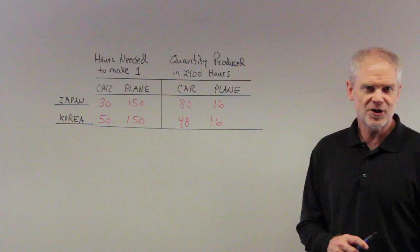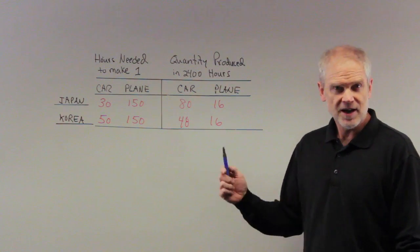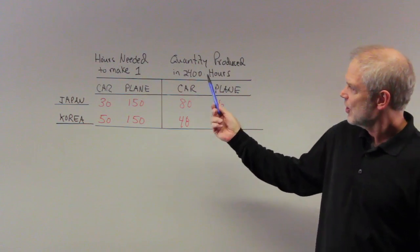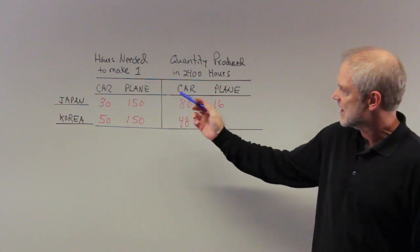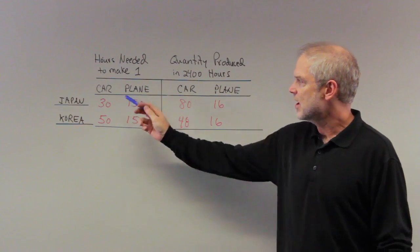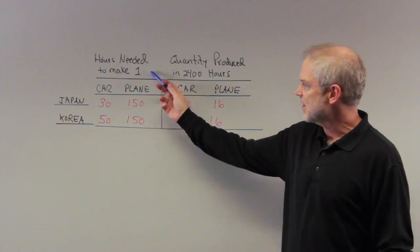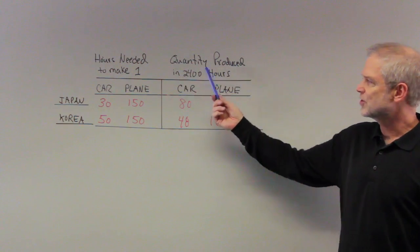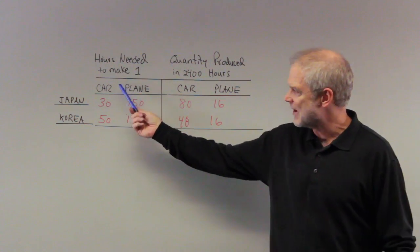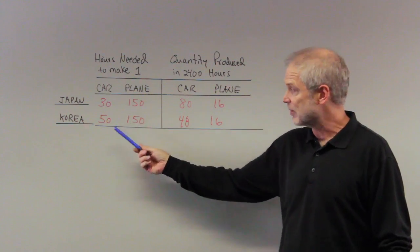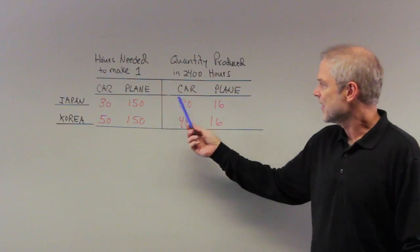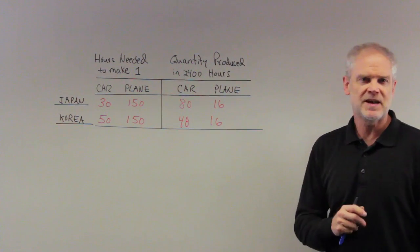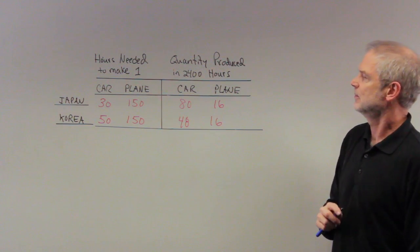So on your handout, the quiz you should have posted, it's problem number seven. I have drawn the chart that exists on that table and I've put it up here. So we have two parts of this problem. It says hours needed to make one car or hours needed to make one plane. And this is quantity produced in 24 hours. So if this is how many hours it takes to produce one car or one plane, either Japan or Korea, this is going to be the total amount. I'll go through this in more detail in a minute, but just make sure you understand the basic schematic problem here.